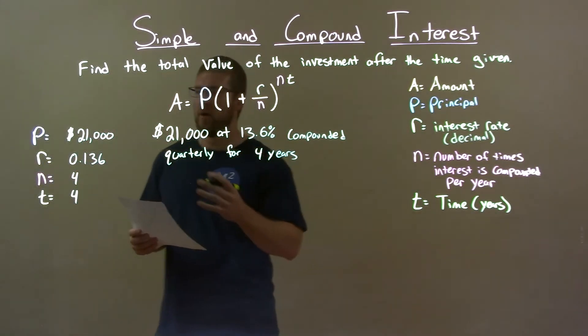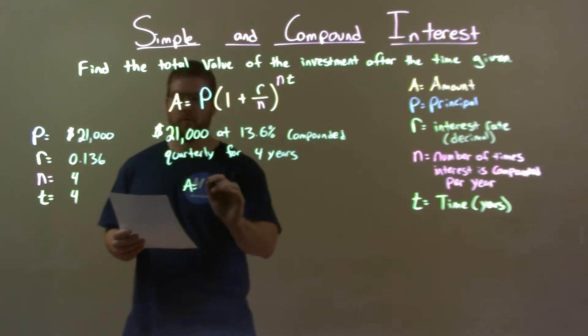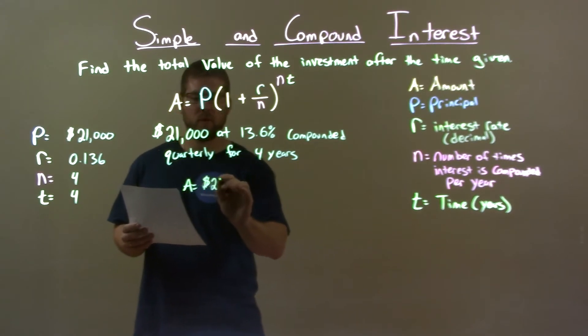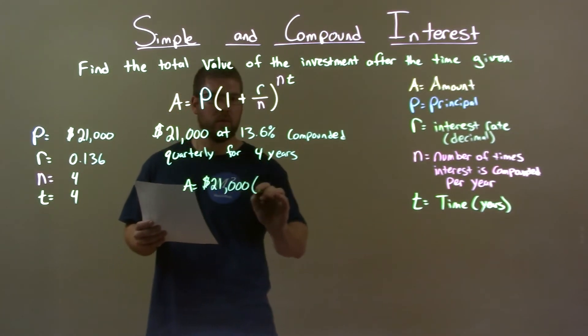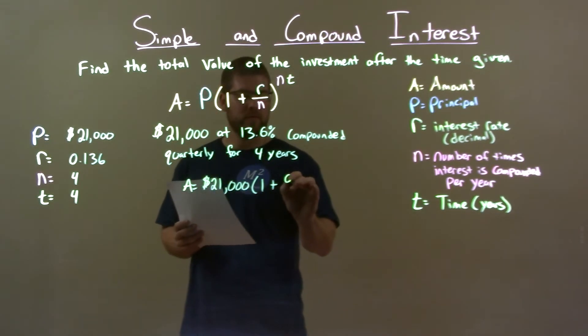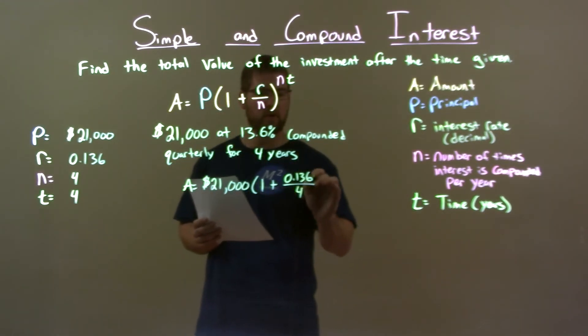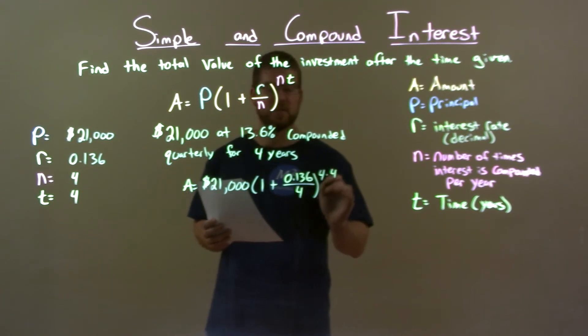Okay. With that, we need to plug that into our formula for compound interest. A equals my principal, $21,000, multiply that by one plus R, my interest rate as a decimal, 0.136, over the number of times we compound in a year. Quarterly being four, to the exponent of that four times the number of years, which is also four.